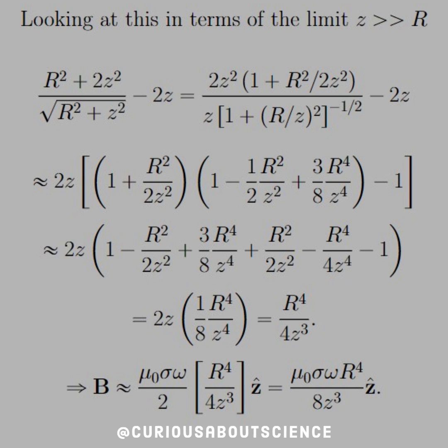And if we substitute this in, we get that the field is approximately mu naught sigma omega R to the 4th divided by 8z cubed z hat.